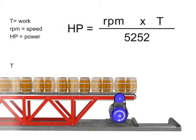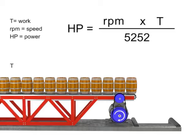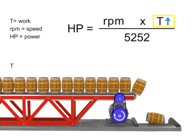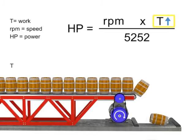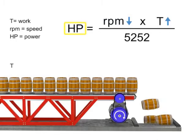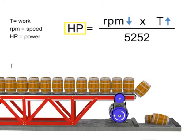Let's say we want the horsepower of our motor to remain constant but wish to increase the torque. If torque increases, the speed of the conveyor decreases so that the horsepower required of the motor remains constant.